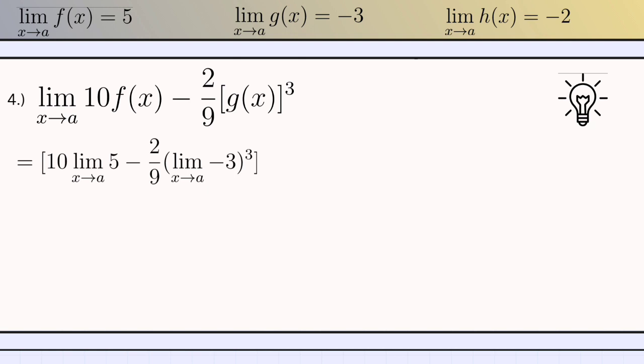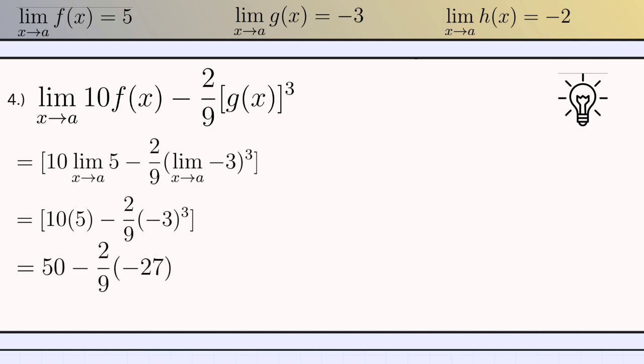After this, the first thing we need to solve is the number inside the parentheses, since theorem number 7 states that we should find the limit of the function inside the parentheses first before moving on to the exponent. Again, using theorem number 1, it would be 10 times 5 minus 2, over 9 times negative 3 cubed. Now we just simplify: 10 times 5 is 50, and negative 2 over 9 times negative 27 is 6. So 50 plus 6 equals 56, and that is our answer.